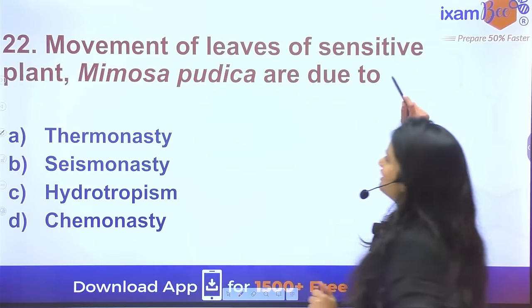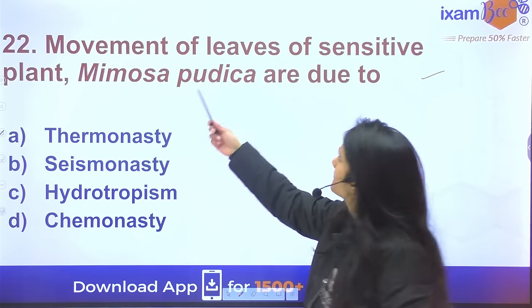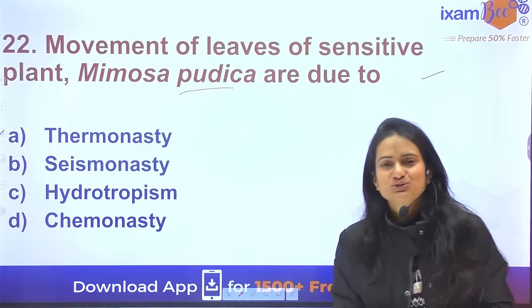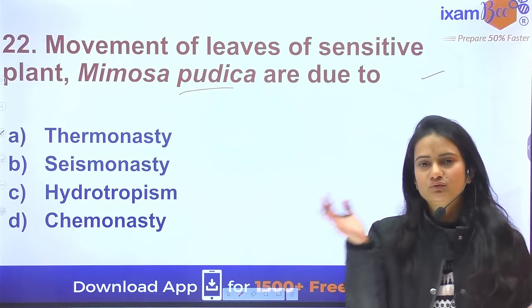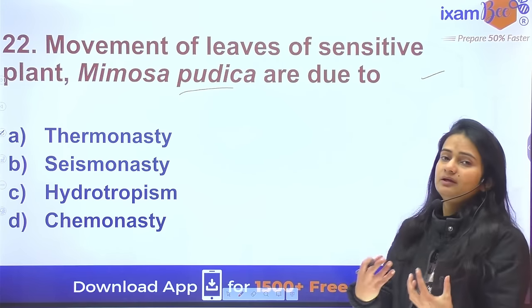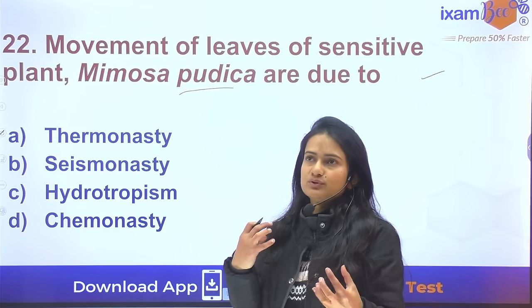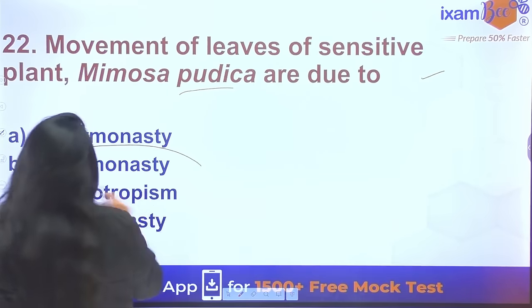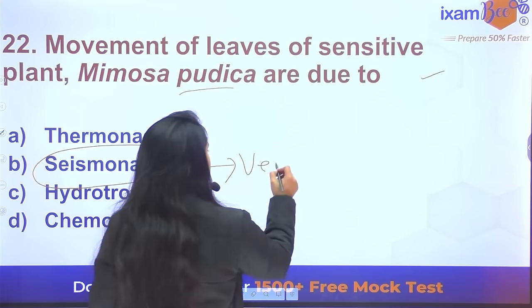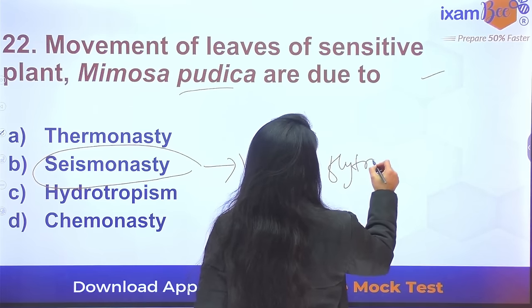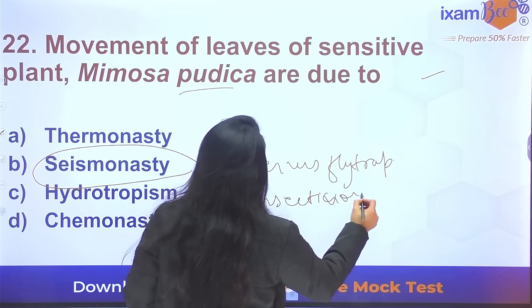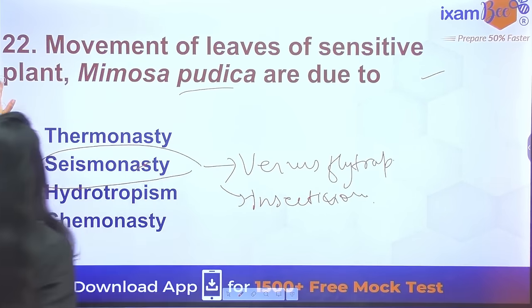Question 22: The movement of leaves in a sensitive plant (Mimosa pudica) — when you touch it, the leaves fold. What type of movement is this? This is called seismonasty. Another example of seismonasty is the Venus flytrap — all insectivorous plants respond to touch in this way.